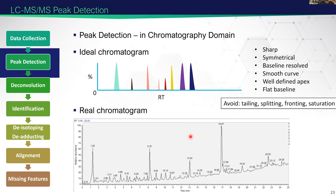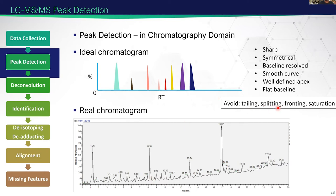Then you've got peak detection — trying to detect all of our chromatographic features. An ideal chromatogram has sharp, symmetrical, baseline-resolved features with smooth curves, well-defined apexes, and a flat overall baseline. In reality that never happens — we get a changing baseline over time, features that are not actually separated, and co-eluting features. Sometimes you want to avoid tailing, splitting, and fronting, and if you do have these issues, they're very difficult to resolve post-processing; you generally want to improve your upfront separation.